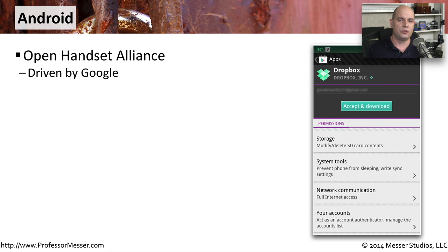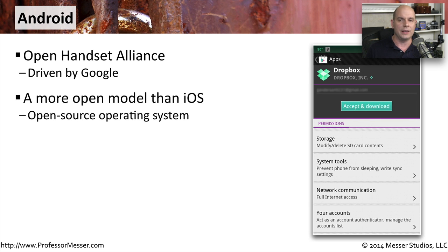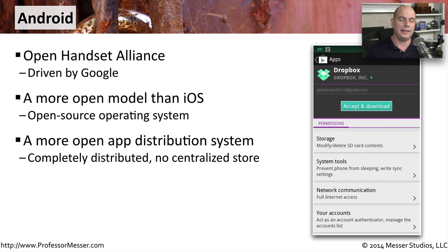Another popular mobile operating system is Android. Android is from the Open Handset Alliance and Google plays a very large part in leading the direction of where Android goes. This is certainly a more open model than Apple's iOS — it is an open source operating system designed from the very beginning to provide more of an open architecture for mobile devices. The application distribution system is not completely centralized; you can go to the Google Play front end to download applications, but application developers could also simply install the software on their web server and you could download it directly to your Android device.